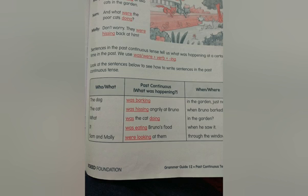Past continuous — what was happening? The cat was hissing angrily at Bruno. When/where? When Bruno barked. Third example.